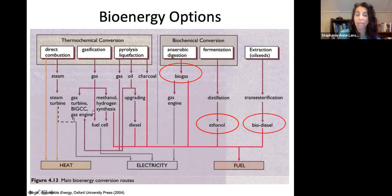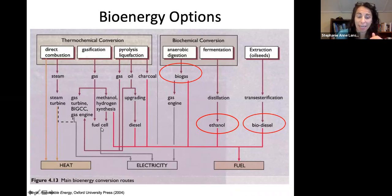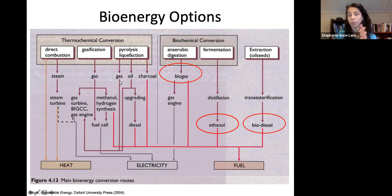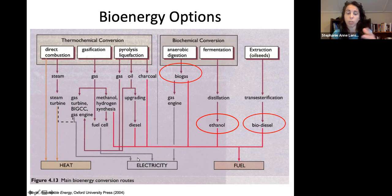Gasification, under lower oxygen conditions than combustion, creates a syngas, which can go to electricity. Pyrolysis and liquefaction, often to electricity, but we can also make some bio oil. It's a higher temperature process with lower oxygen content. Those are all just burning in different conditions, controlling those conditions to produce heat, electricity, or a little bit of bio oil.